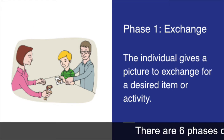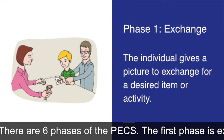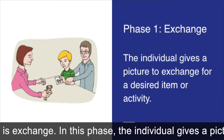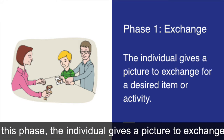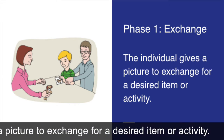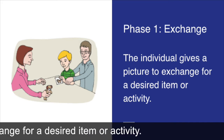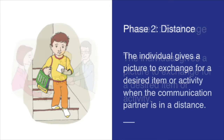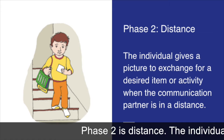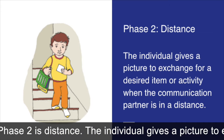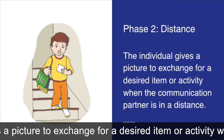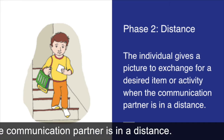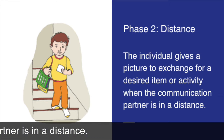There are six phases of the PECS. The first phase is Exchange. In this phase, the individual gives a picture to exchange for a desired item or activity. Phase 2 is Distance. The individual gives a picture to exchange for a desired item or activity when the communication partner is at a distance.